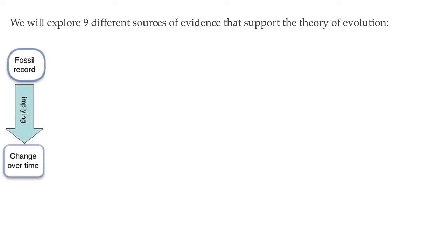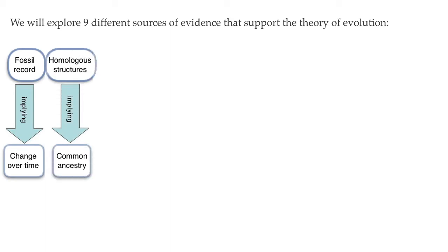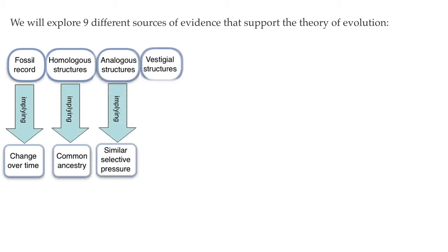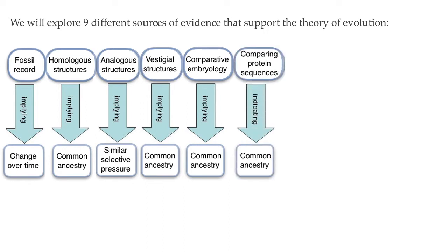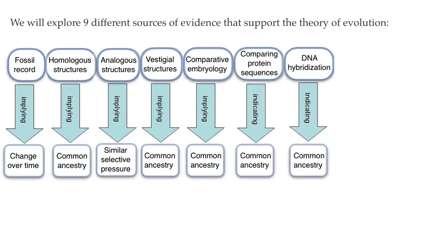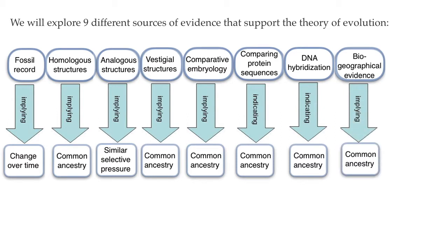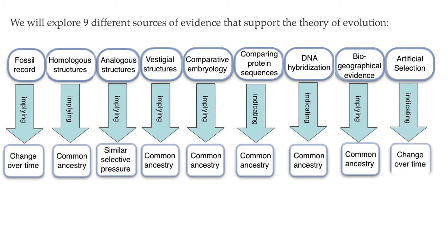Evidence from fossils; evidence from anatomy like homologous structures, analogous structures, vestigial structures, and comparative embryology; evidence from molecular biology, which compares proteins and DNA from different species; evidence from biogeography, which is the global distribution of organisms; and also direct observation in the form of artificial selection.